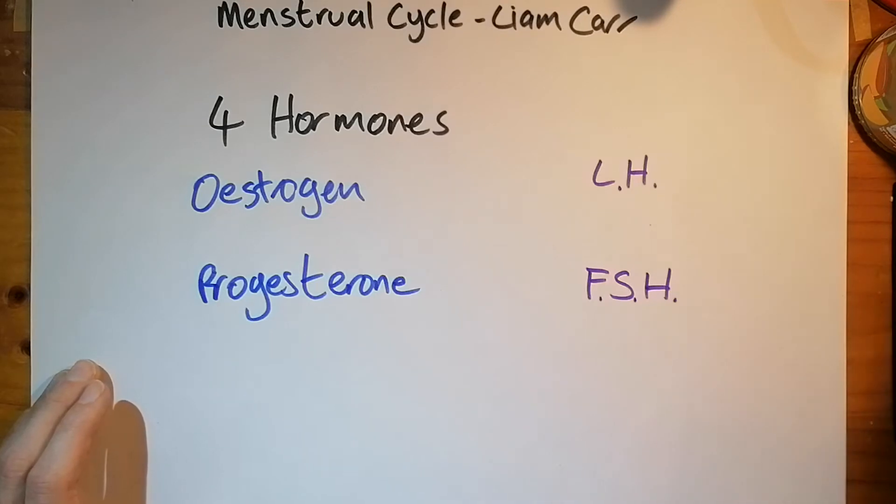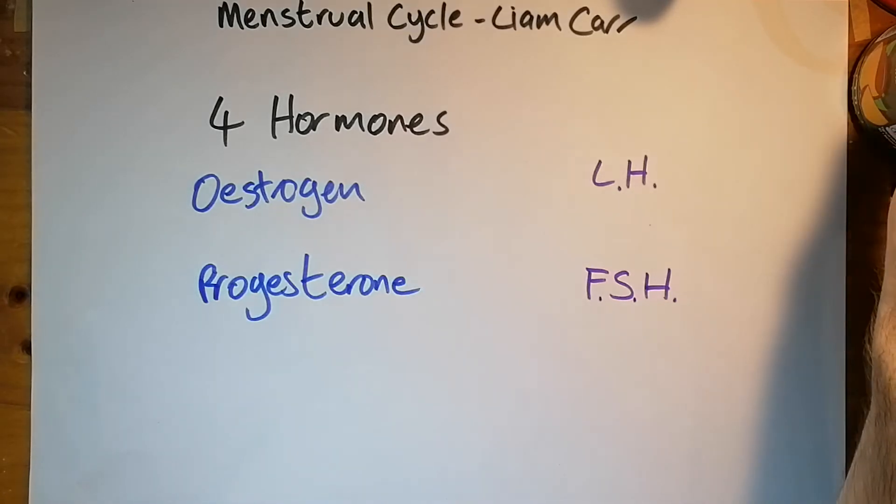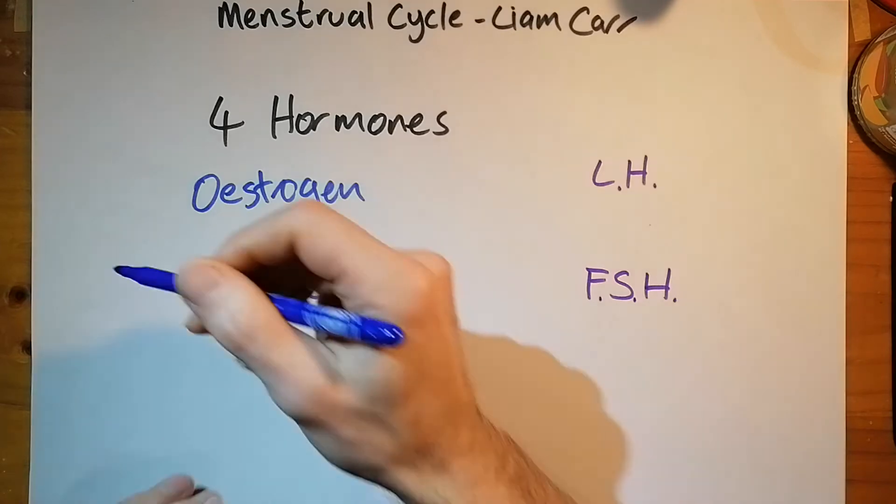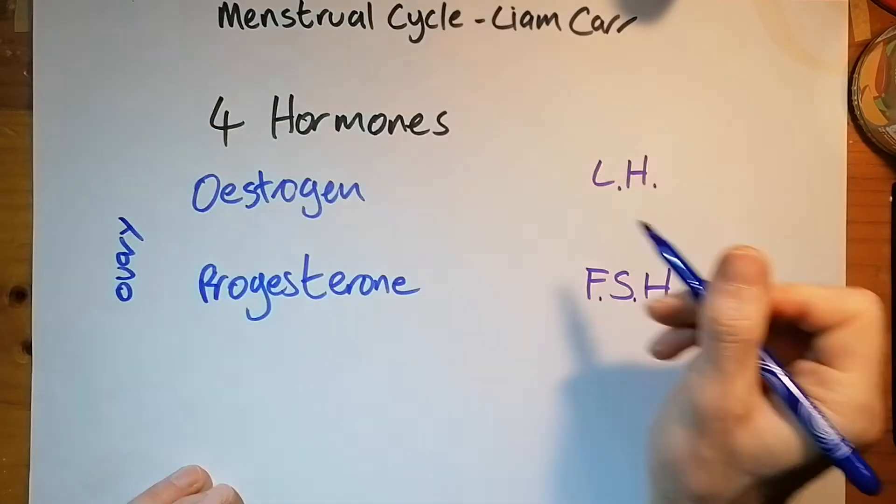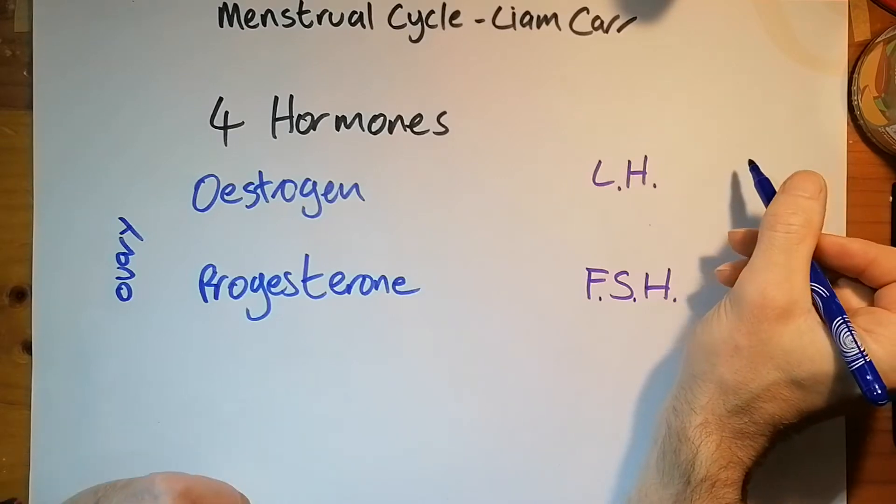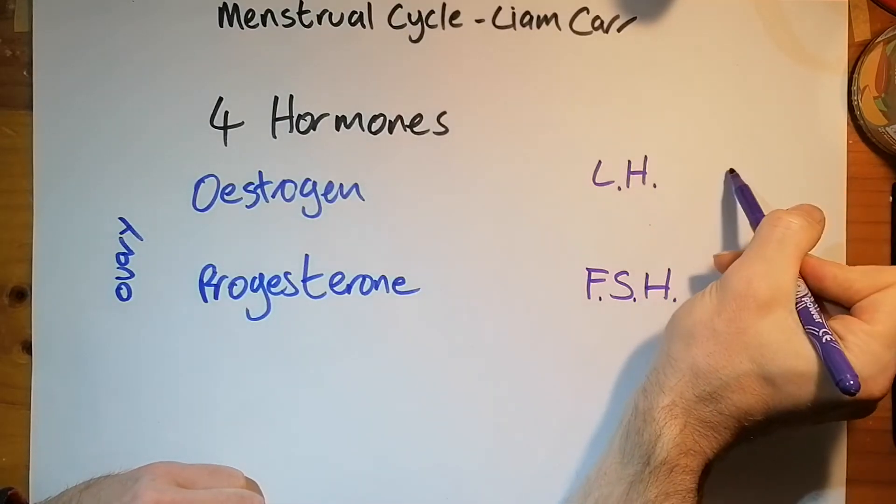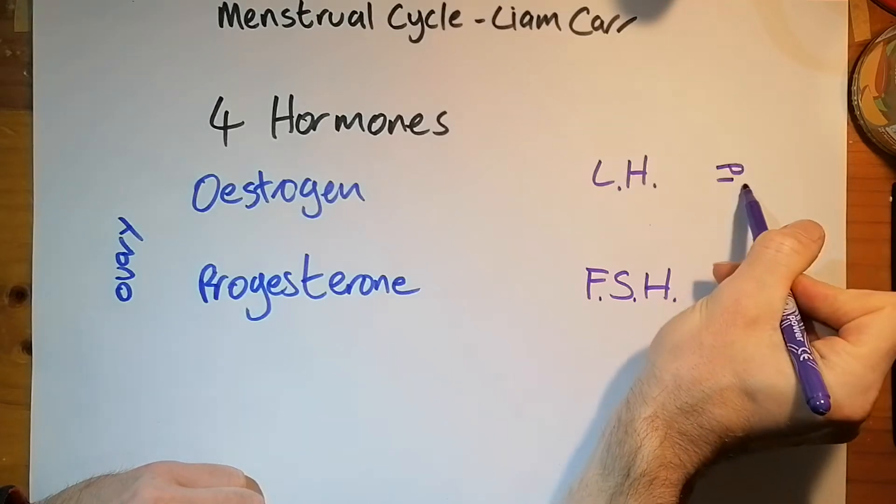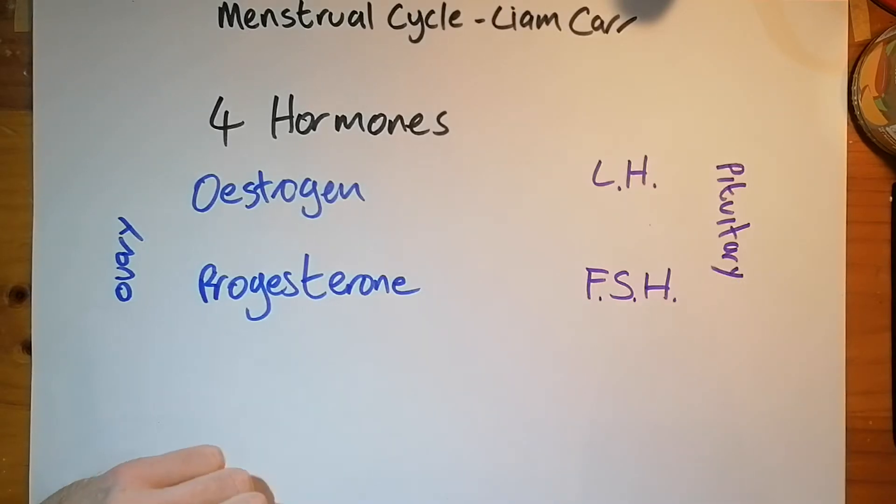And these two hormones come from two different locations in the body. These two hormones, estrogen and progesterone, they come from the ovary. And the LH and FSH, they come from the pituitary gland, which is near your brain.